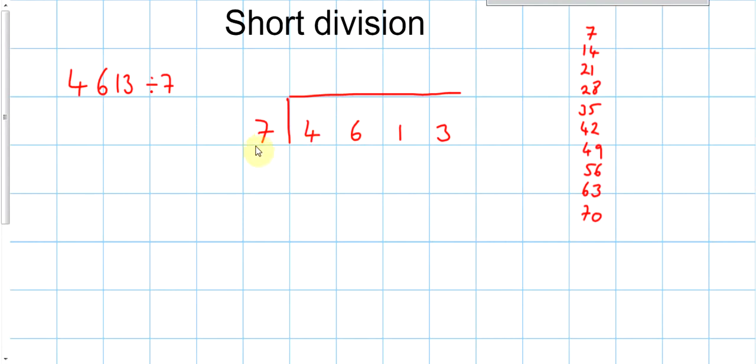OK, so now we hold a little conversation with ourselves. So, 7s into 4 don't go. Move the 4 along because we haven't used it up yet. 7s into 46 go 6 times, remainder 4.